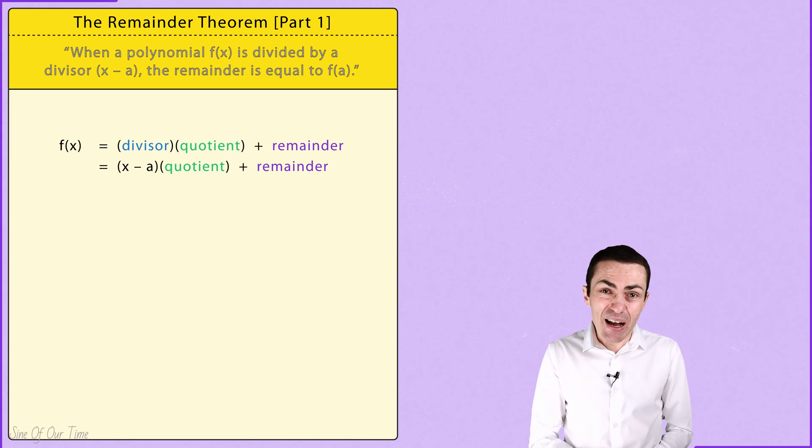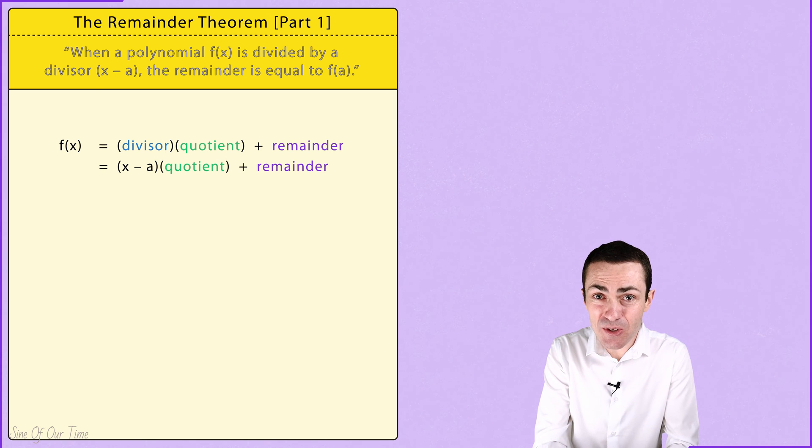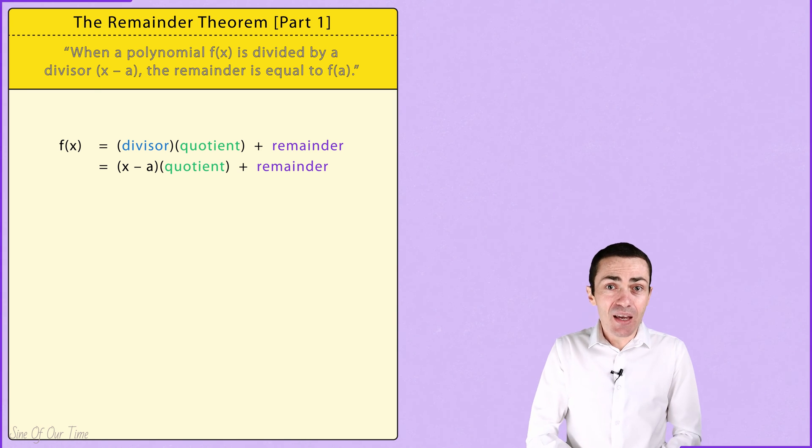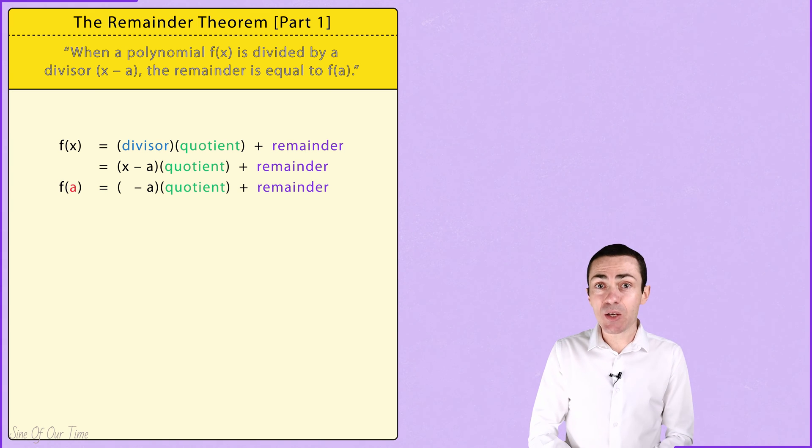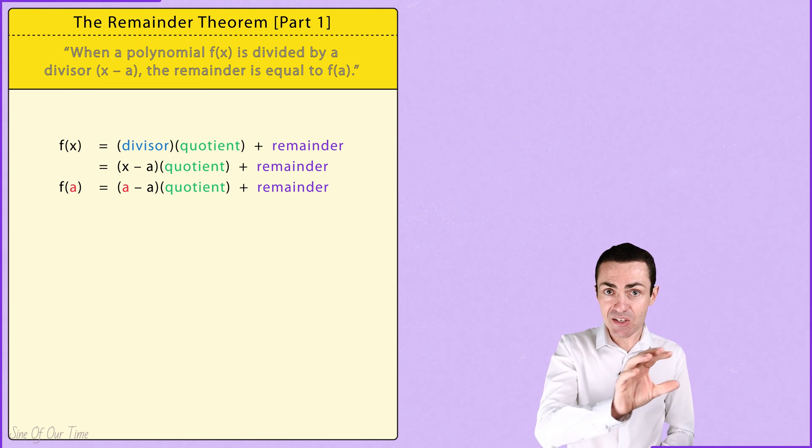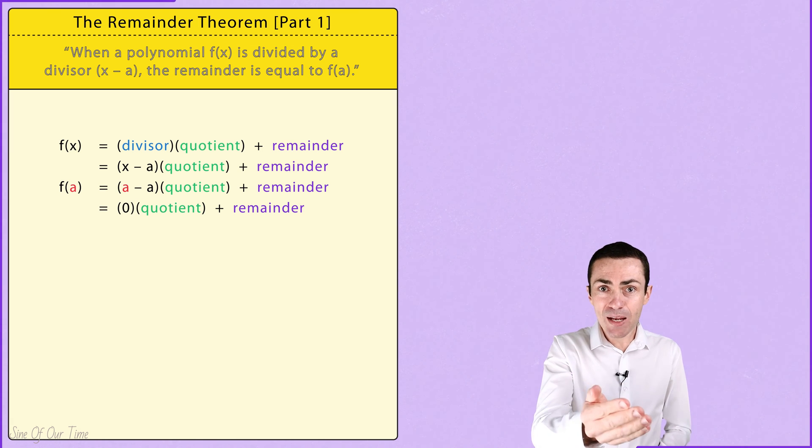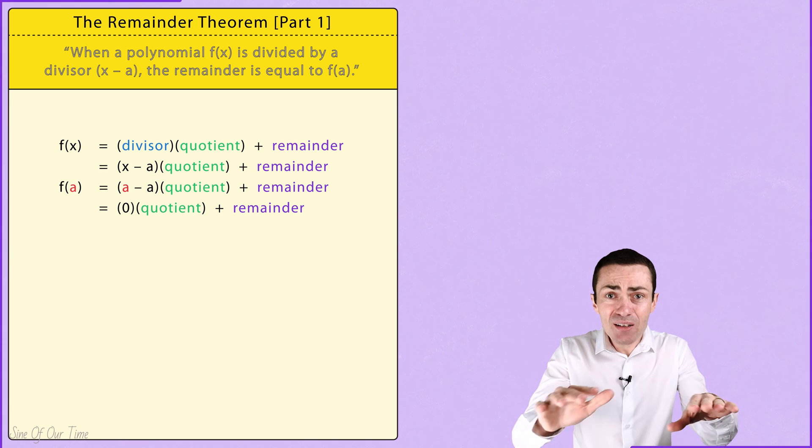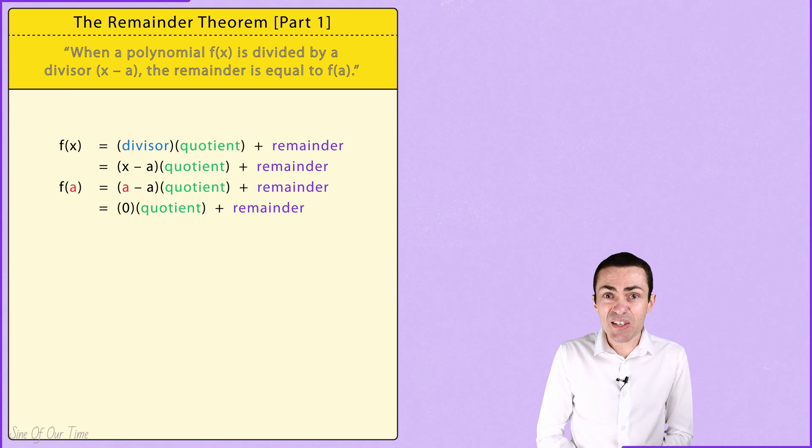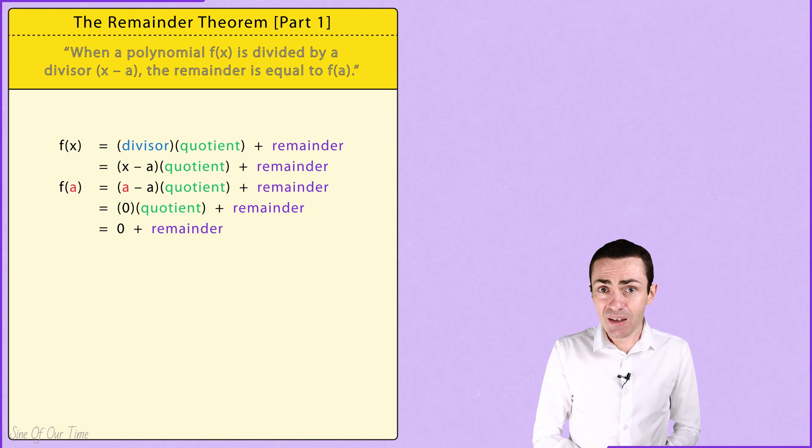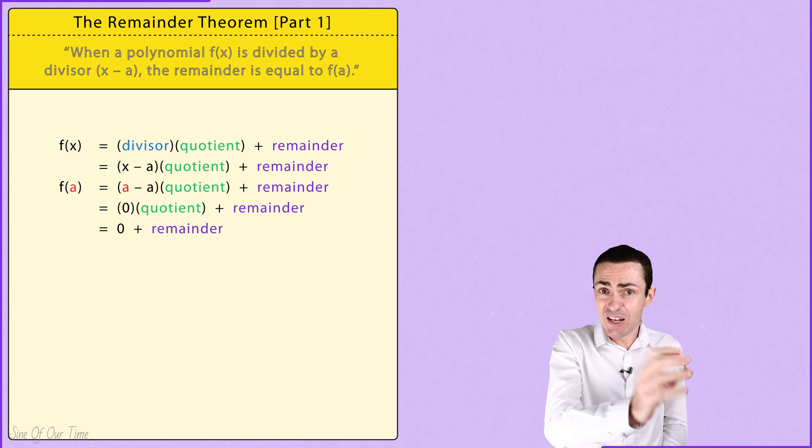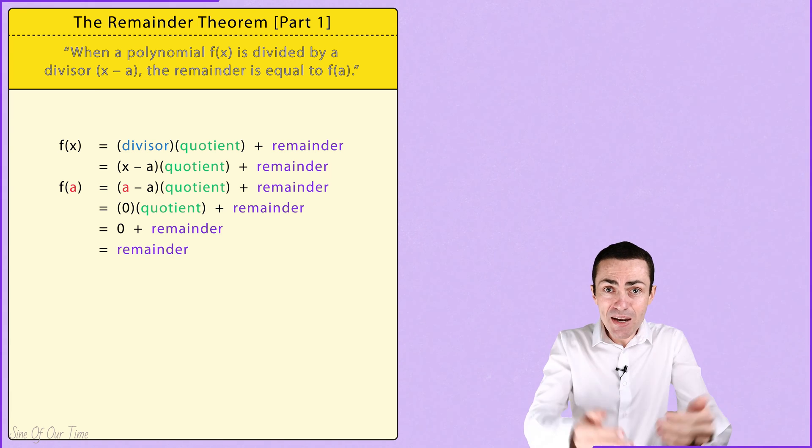I know this might sound a little confusing at first, but let's think about it. f(a) just means that we are replacing any x's with a's. And when we do this, we see that the divisor is a minus a, which is equal to zero. Now, zero multiplied by a quotient, regardless of what that quotient is, basically gives us zero. That leaves us with zero plus the remainder. And ultimately, zero plus that remainder is just equal to the remainder.